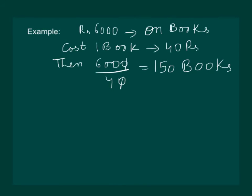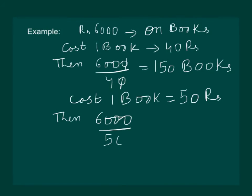But if the cost was Rs. 50, the cost of one book is Rs. 50, then how many books can we buy? 6000 divided by Rs. 50, and this will come out to be 120 books. That means, as the cost of the book is increasing, the number of books that we can purchase is decreasing. So, the cost and the number of books that we can purchase are inversely proportional.